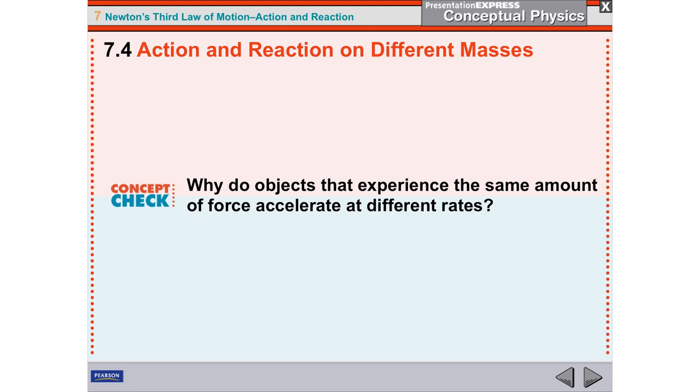The different masses will exert different accelerations based upon the same force. The only time it will be the same is if you have two masses that're exactly the same, and then you'll have equal opposite forces experiencing the same acceleration. Otherwise, you're going to have a difference in acceleration.